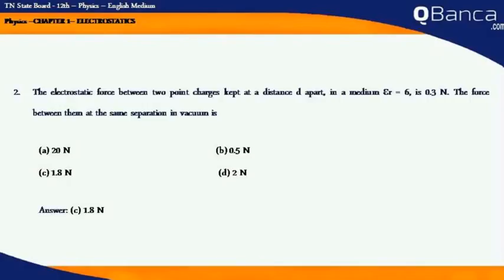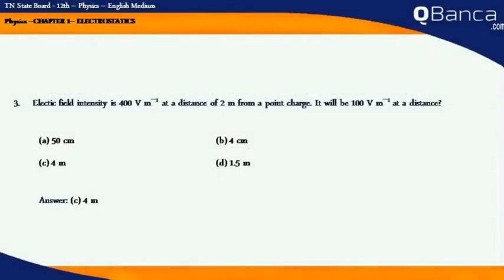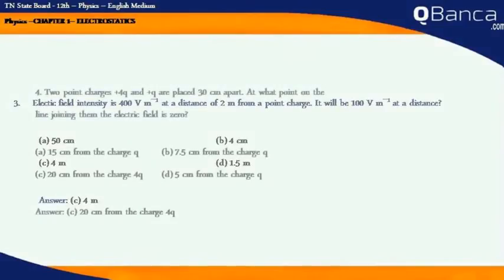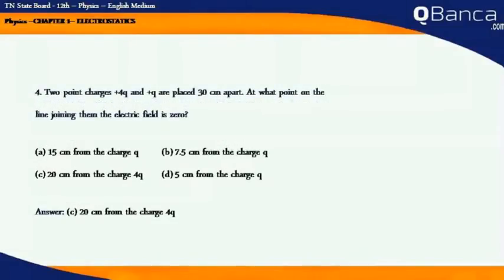Electric field intensity is 400 V/m at a distance of 2 m from a point charge. It will be 100 V/m at a distance of. Answer: 4 m.